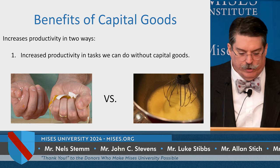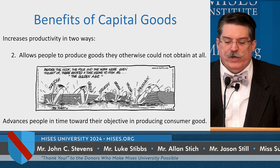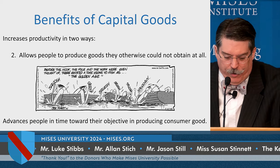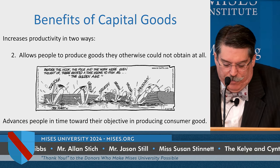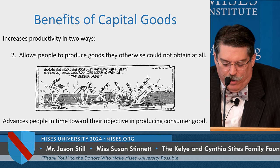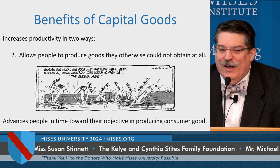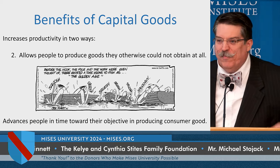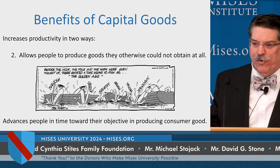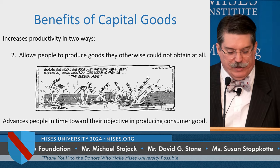Secondly and most importantly, capital goods allow us to produce goods we otherwise could not obtain at all. As the cartoon illustrates: before the hook, the pole, and the worm were even thought of, there existed a time known to fish as the Golden Age, where people were left trying to fish with just their bare hands. It would be almost impossible to live off fish without certain capital goods. Automobiles, eyeglasses, and smartphones would all be impossible to have without capital goods.